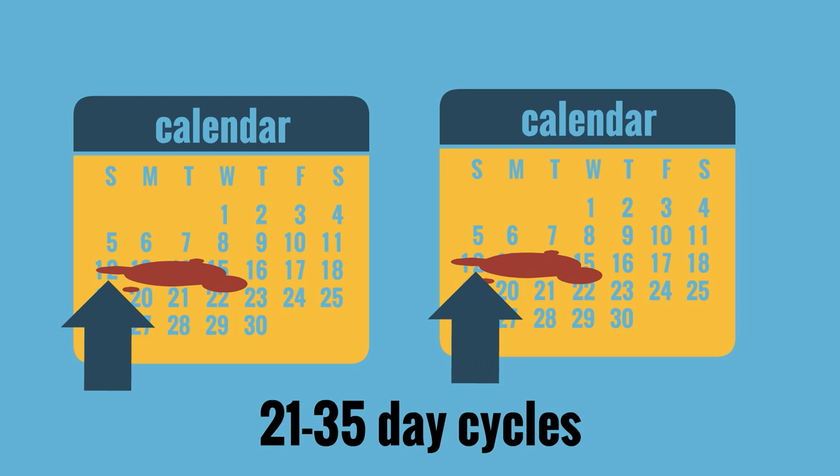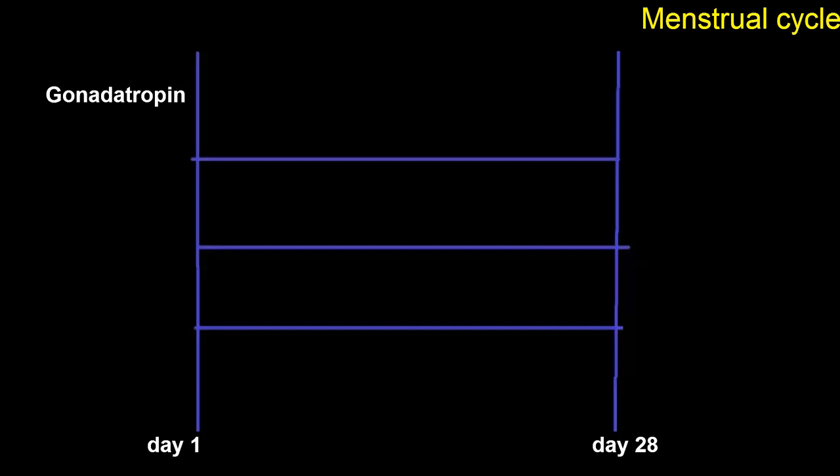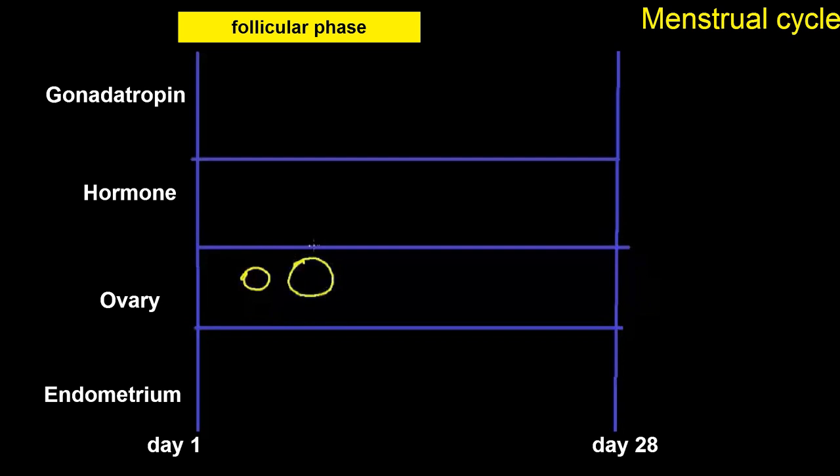Let's discuss the mechanics of how this cycle works so predictably. Here is a timeline starting with day 1 of menses through day 28. We'll look at gonadotropin and hormone levels in relationship to ovarian and endometrial changes. A primary follicle develops during the follicular phase and becomes the dominant follicle — we'll label that follicle D. This follicle secretes increasingly large amounts of estradiol, and you can see the estradiol levels rising. During the follicular phase, LH levels increase and there is a surge on day 11 to 13 of the cycle.